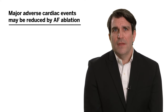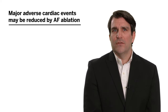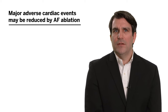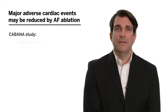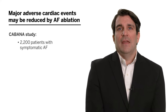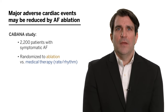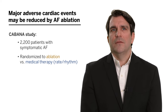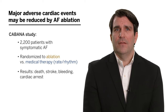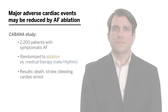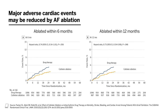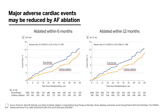Recent data has suggested that major adverse cardiac events may be reduced by AFib ablation. In the large-scale CABANA study of 2,200 patients with symptomatic AFib — not necessarily with heart failure — patients were randomized to ablation or medical therapy, which could include rate or rhythm control. Outcomes such as death, stroke, bleeding, and cardiac arrest were assessed. This study had methodologic issues mostly due to crossover; however, patients who were ablated within six to twelve months of entering the trial had overall better outcomes, with a p-value around 0.05.